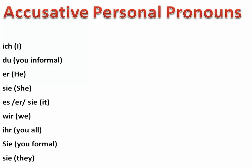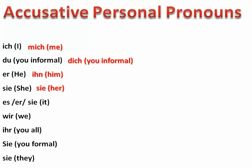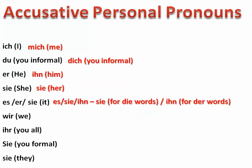So let's look at the accusative personal pronouns. I have the subject or nominative pronouns already here. In the nominative it's ich; in the accusative it becomes mich. In the nominative it's du; in the accusative it becomes dich. Er becomes ihn. Sie — she — stays sie. For 'it' in German, you can refer to masculine nouns with er, feminine nouns with sie. When it's a direct object, for a neuter noun you refer to it as es, for a feminine noun as sie, and for a masculine noun as ihn.